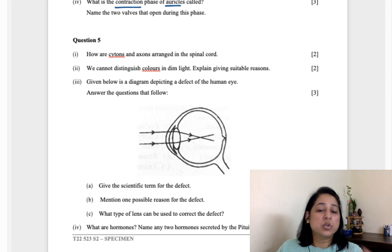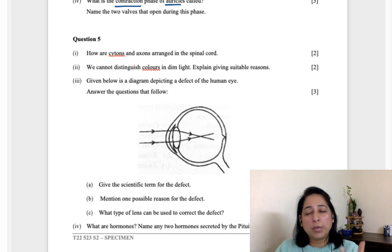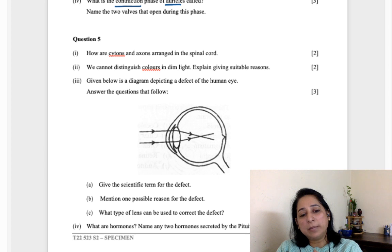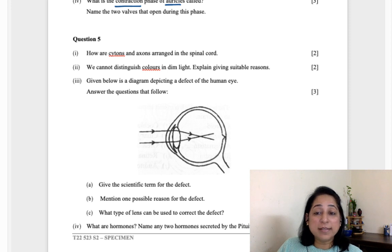What is the contraction phase of auricles called? Contraction of auricles is auricular systole. Systole is for contraction, diastole for relaxation. Name the two valves which open during this phase. If it is contraction phase, when the auricles are contracting and passing the blood to the ventricles, the valves which are closing are bicuspid and tricuspid, and the ones which are opening are aortic and pulmonary semilunar valves. It's clearly mentioned in your book - bicuspid and tricuspid, but they are asking about the opening, so open would be semilunar valves.